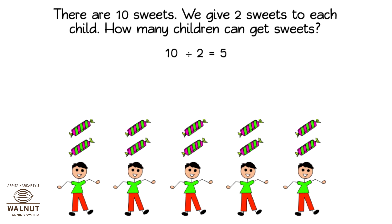Ten divided by two is five. We subtracted again and again to divide. So ten divided by two is equal to five.